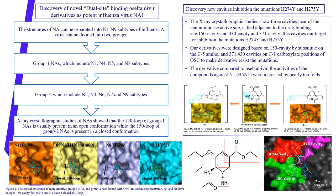Assalamu alaikum wa rahmatullahi wa barakatuh. I am Maad Al-Safiyani from group 2. I will talk about the discovery of a novel dual site of binding of oseltamivir as a protein to influenza virus A, and the discovery of new cavities to inhibit the H-274Y and H-275Y mutations. First, I will explain neuraminidase subtypes. We have nine subtypes divided into group 1 and group 2. The difference shown by X-ray crystallography is that the 150 loop in group 1 has an open conformation, while in group 2 it has a closed conformation. N09-IN-1 is an exception — it belongs to group 1 but is similar to group 2 because it has a closed conformation.